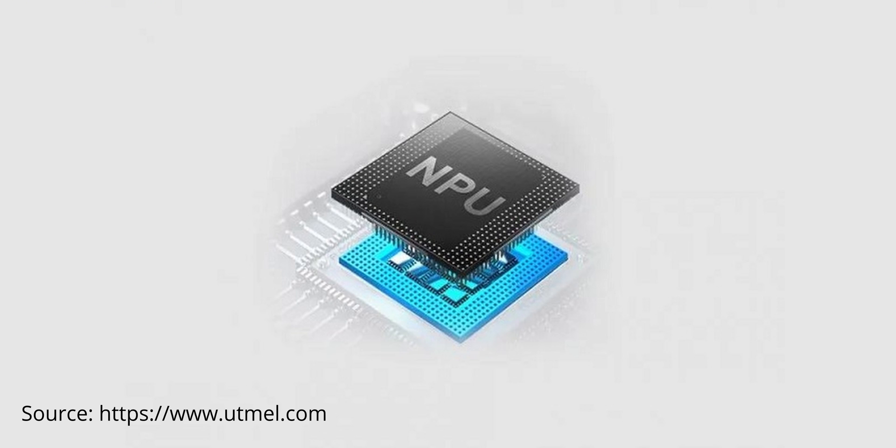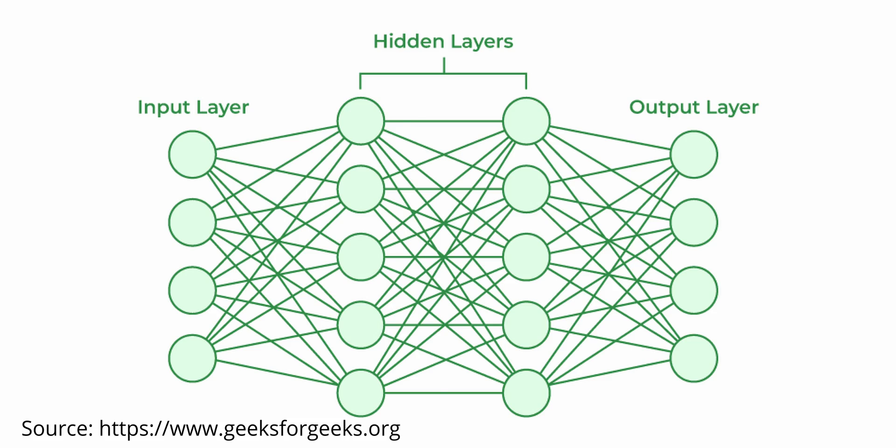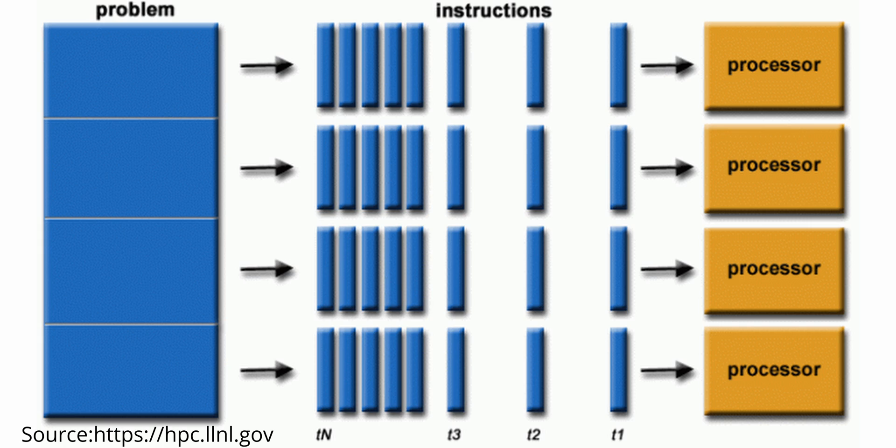Let's start with what an NPU is. An NPU, or Neural Processing Unit, is a specialized microprocessor used in machine learning algorithms. These are optimized to handle highly complex problems, typically operating on a predictive model such as an artificial neural network or random forest. Unlike CPUs and GPUs, NPUs can process a large amount of data in parallel, making them ideal for image recognition, NLP, and other AI-related tasks.